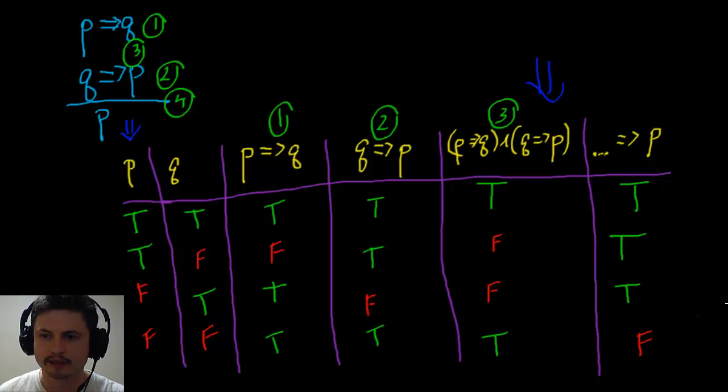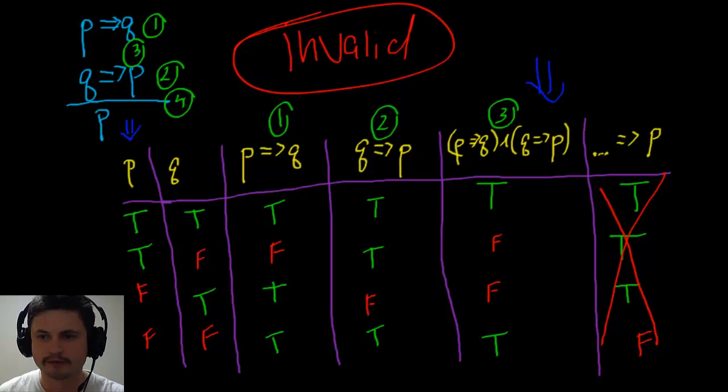Now because of this one false, this whole thing is going to be an invalid argument. This is an invalid argument. So this cannot be valid. And essentially this is how you do valid arguments and how you use these tables and logic specifically to try to solve them. Hopefully this was a little bit more clear.